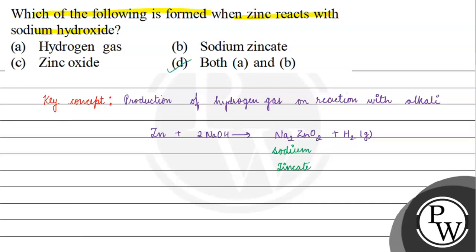The correct answer for this question will be option D, both A and B. If zinc reacts with sodium hydroxide, you have sodium zincate and hydrogen release.